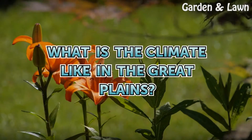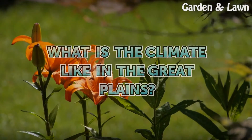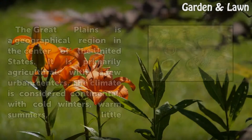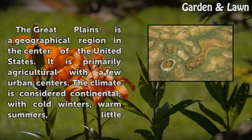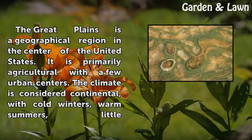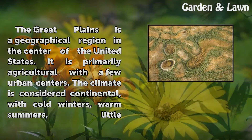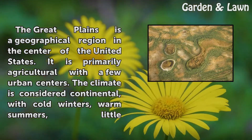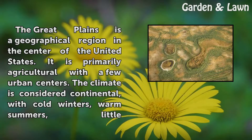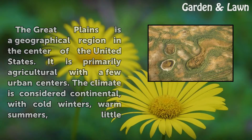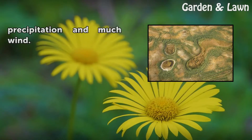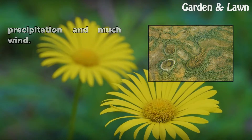What is the climate like in the Great Plains? The Great Plains is a geographical region in the center of the United States. It is primarily agricultural with a few urban centers. The climate is considered continental, with cold winters, warm summers, little precipitation, and much wind.